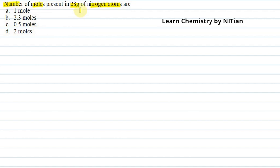We are asked how many nitrogen atoms are present in 28 grams. Here we have the mass given of nitrogen atoms. So I will mention this here first. Mass of nitrogen atoms is given as 28 grams.